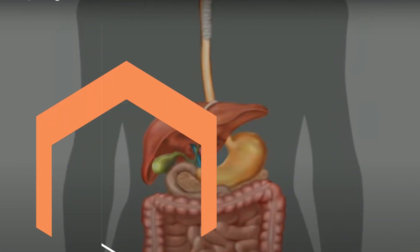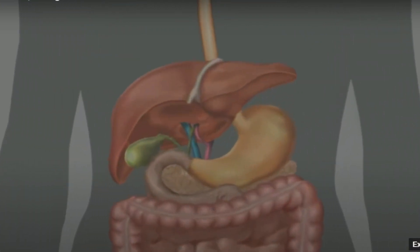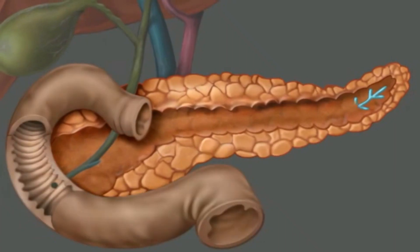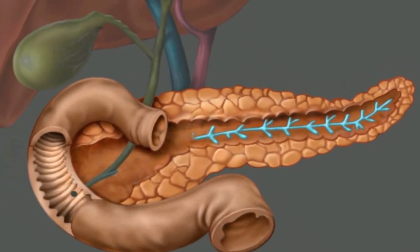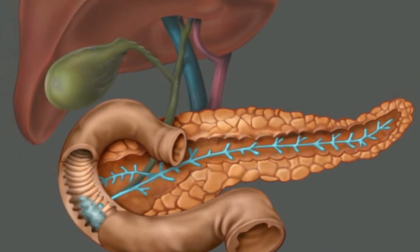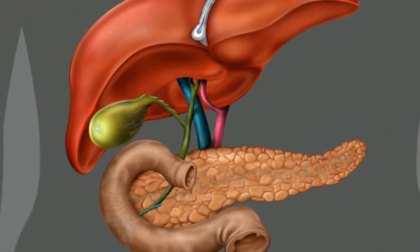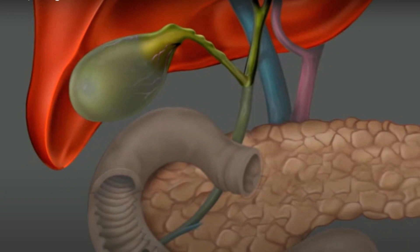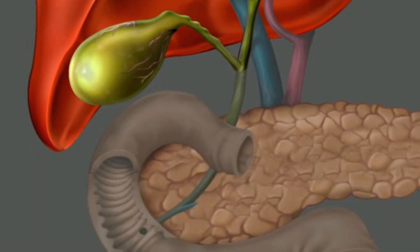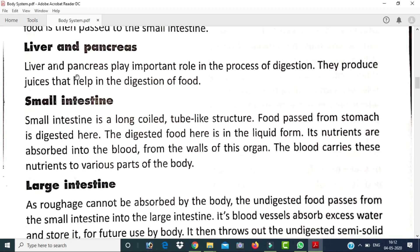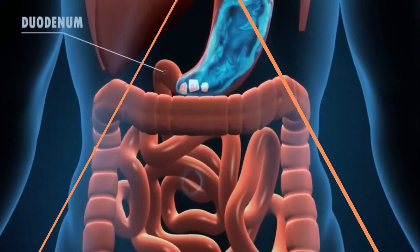The liver and pancreas play an important role in the process of digestion. The liver is the largest gland in our body. The pancreas secretes enzymes that help in the digestion of sugar. The liver secretes bile acid, which helps in the digestion of fat in our body.